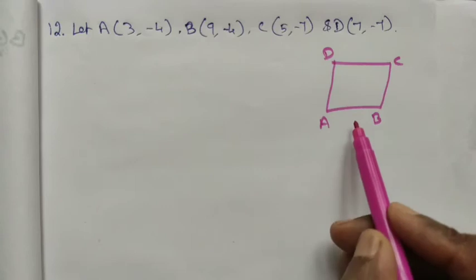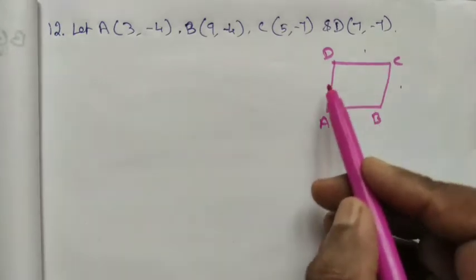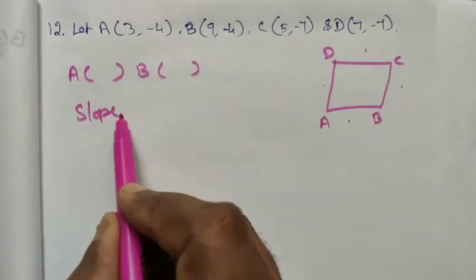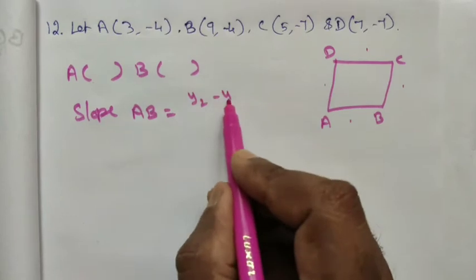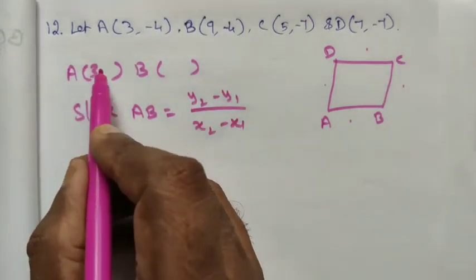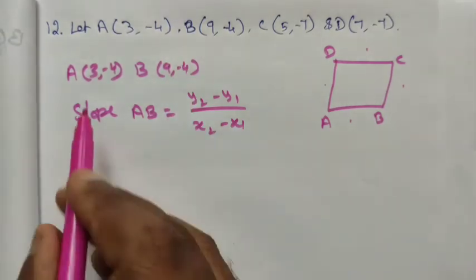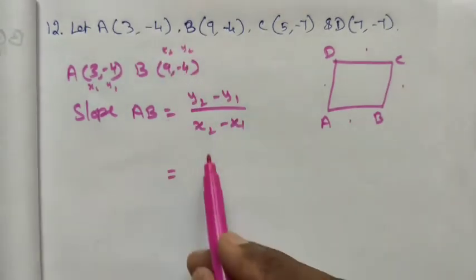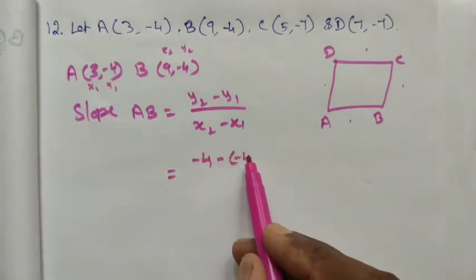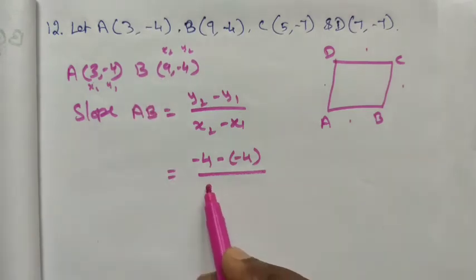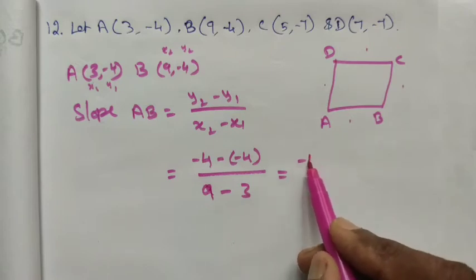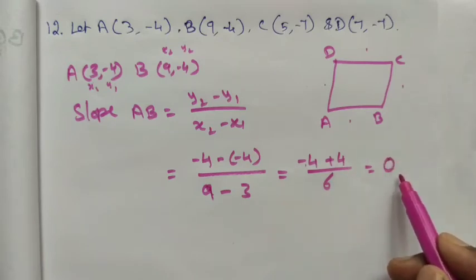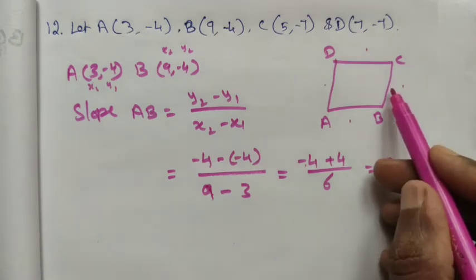We want to find the slope for each side: AB, BC, CD, and AD. First, finding the slope of AB. The slope formula for two points is (y2 - y1) / (x2 - x1). Point A is (3, -4) and point B is (9, -4). Substituting: (-4 - (-4)) / (9 - 3) = 0 / 6 = 0. Therefore, the slope of AB is 0.